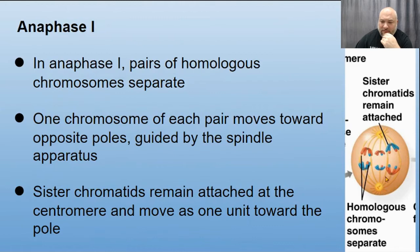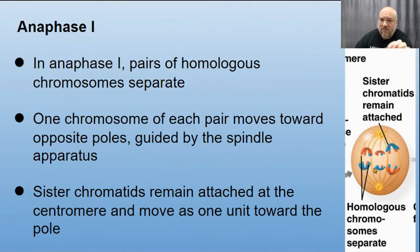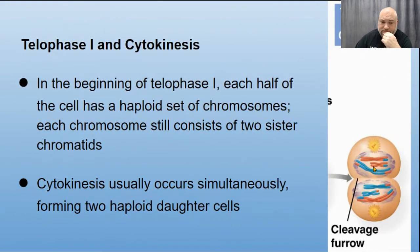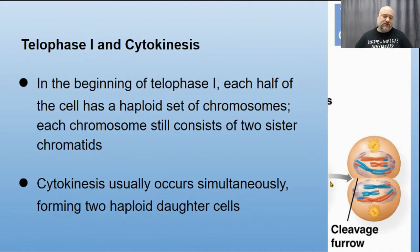In anaphase I, we separate homologous chromosomes — not chromatids. The chromatids are still stuck together. Some of these chromosomes have crossover events, meaning they are unique from where they started. In telophase I and cytokinesis, we reform the nucleus and separate the cytoplasm, just as in mitosis.